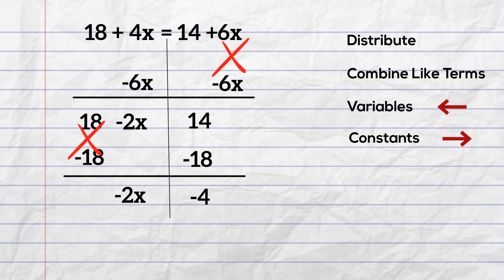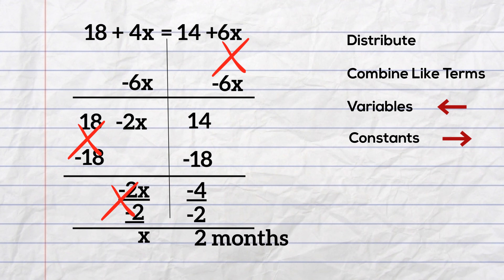Now we need to isolate the x because it needs to be by itself. We can do this by dividing by -2. The negative 2's cancel, and then we have -4 divided by -2, which equals 2. So it will take 2 months for the two clubs to equal the same amount.